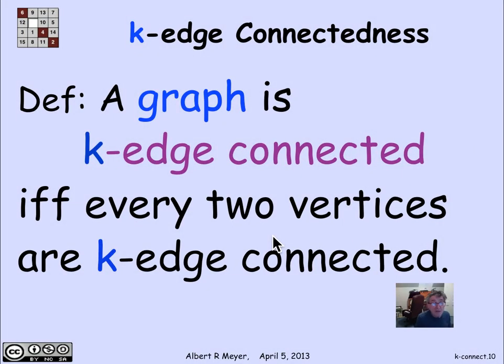For a whole graph, a whole graph is k edge connected if every two vertices are k edge connected.